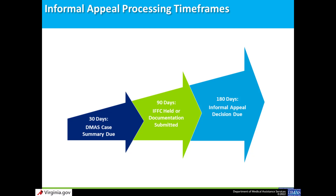This is the basic timeline of an informal provider appeal. 30 days after the appeal is filed, the DMAS case summary is due. 90 days after the appeal is filed, the IFFC must be held or all appeal documentation must be submitted.